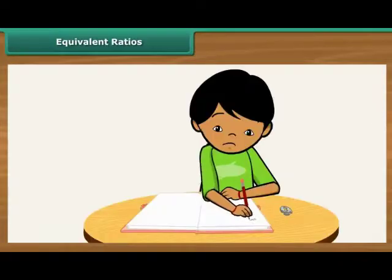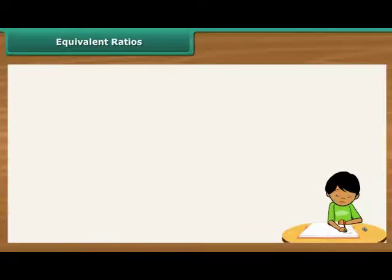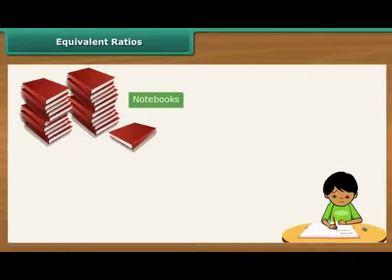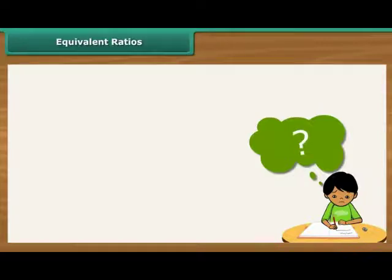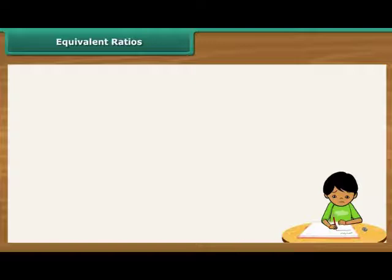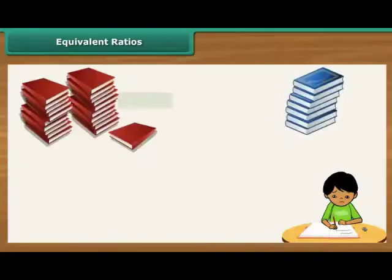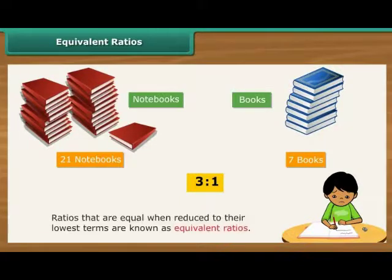Equivalent ratios: Ritesh is learning to calculate ratios and is enjoying it, but there is one thing that is confusing him. He first calculated the ratio of boys to girls in his class as 3 is to 1. He then calculated the ratio of notebooks to books in his bag, which also works out to be 3 is to 1. Can two ratios be the same? Yes, they can. The first tells us that boys are 3 times more than the girls in Ritesh's class. The second tells us that notebooks are 3 times more than the books in his bag. Ratios that are equal when reduced to their lowest terms are known as equivalent ratios.